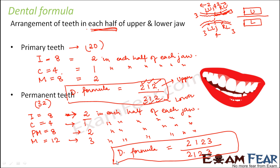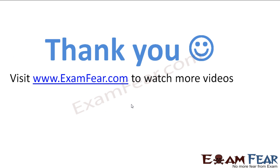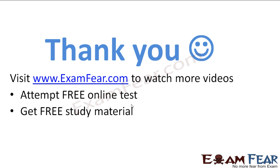So the dental formula for permanent teeth is 2-1-2-3 over 2-1-2-3. In this way we can calculate the dental formula for different animals and mammals — it is a shorthand representation of the arrangement of teeth in different jaws of different animals. That covers everything related to teeth and how teeth help in digestion.